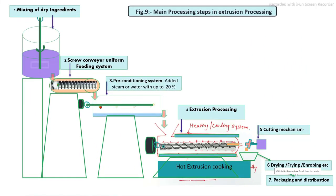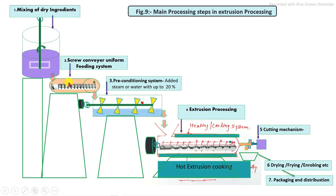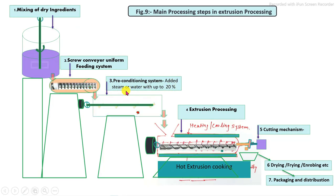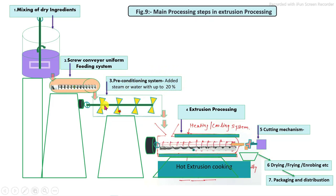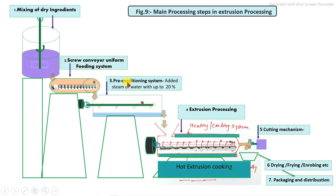The main steps involved in extruded food product processing are: first, in a mixing tank, dry ingredients — cereal grain grits and other dry ingredients — are properly mixed. These are then fed into the pre-conditioning system via screw conveyor. In the pre-conditioning system, water, steam, oils, nutrients, and additives are added and pre-mixed. The pre-mix is then loaded via screw conveyor into the continuous extruder machine to produce the extruded food product. After extrusion, cutting is carried out, and finally the product may be dried, fried, or coated, and then packed.